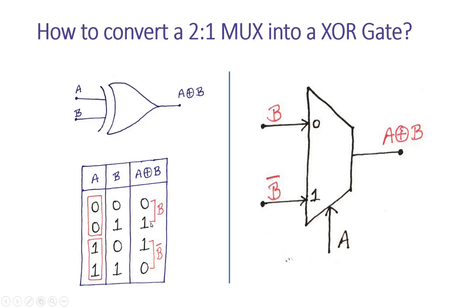Now I will convert a 2-to-1 multiplexer into an XOR gate. This is the symbol of a 2-to-1 multiplexer. I will apply one of the inputs of the XOR gate to its select line; I am applying A at the select line.